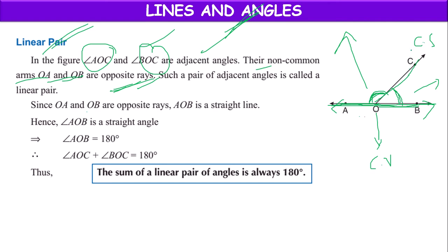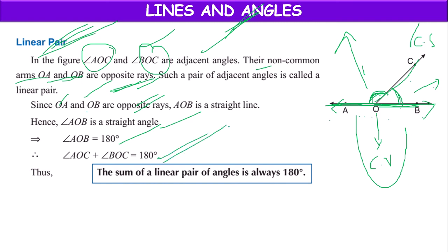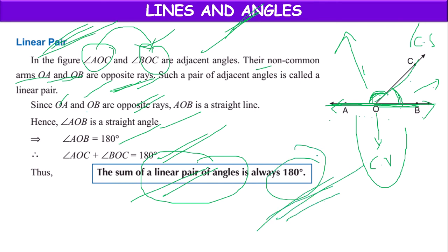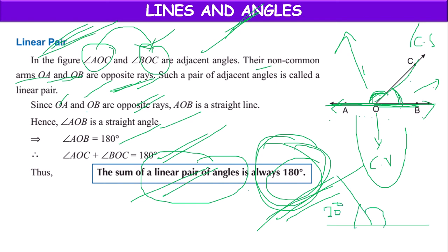If two adjacent angles have a common vertex, common side, with no common interior points, but their non-common arms are opposite rays, then they form a linear pair. Since AOB is a straight line, angle AOB equals 180 degrees, so angle AOC plus angle BOC equals 180 degrees. The sum of a linear pair of angles is always equal to 180 degrees. For example, if one angle is 30 degrees, the other will be 150 degrees, because 30 plus 150 equals 180.